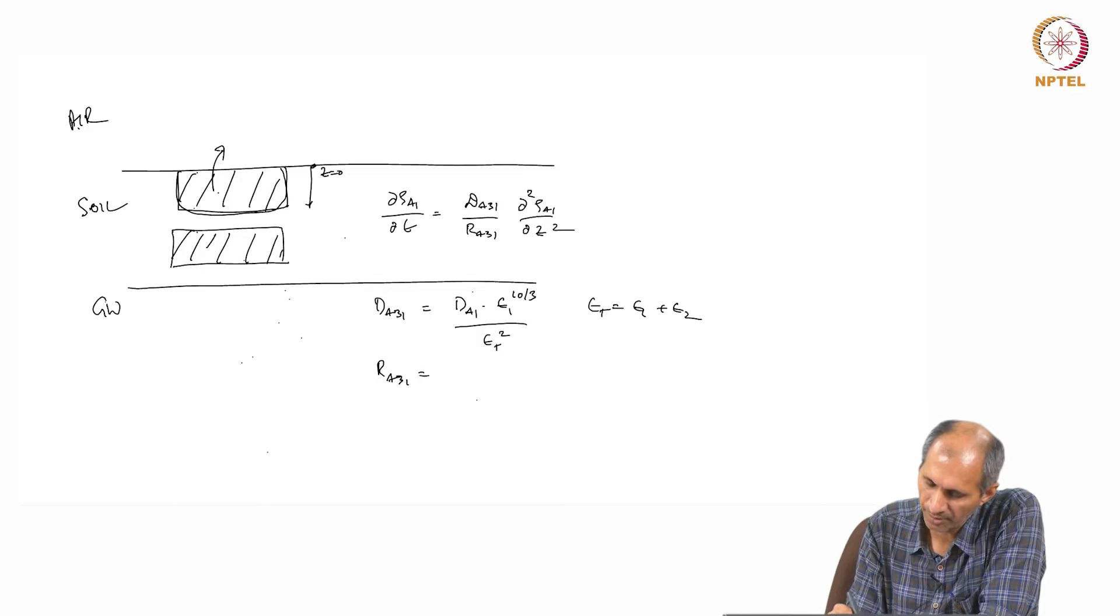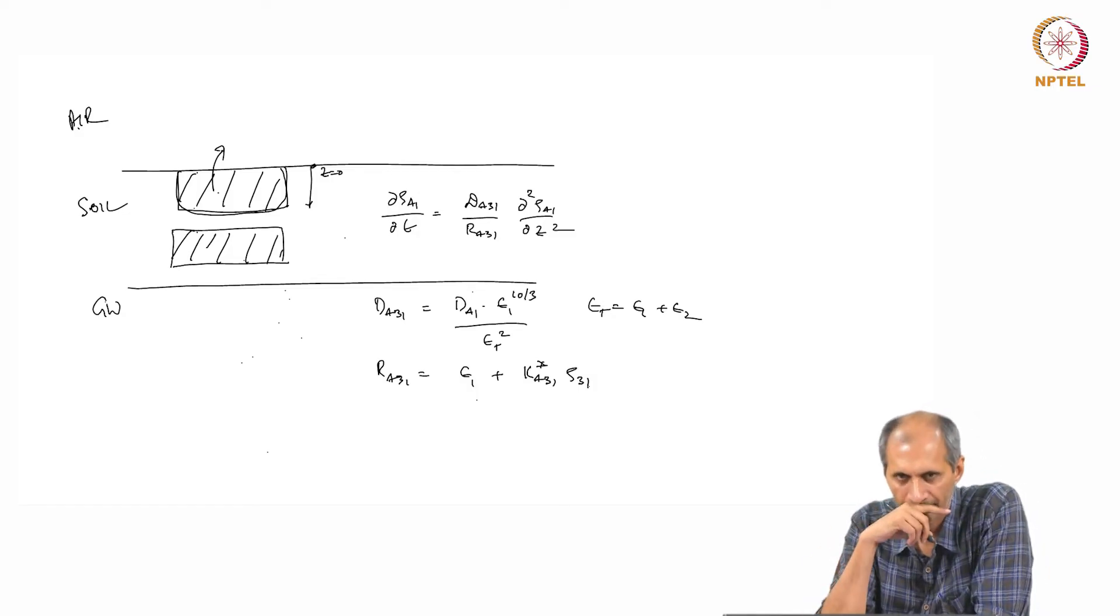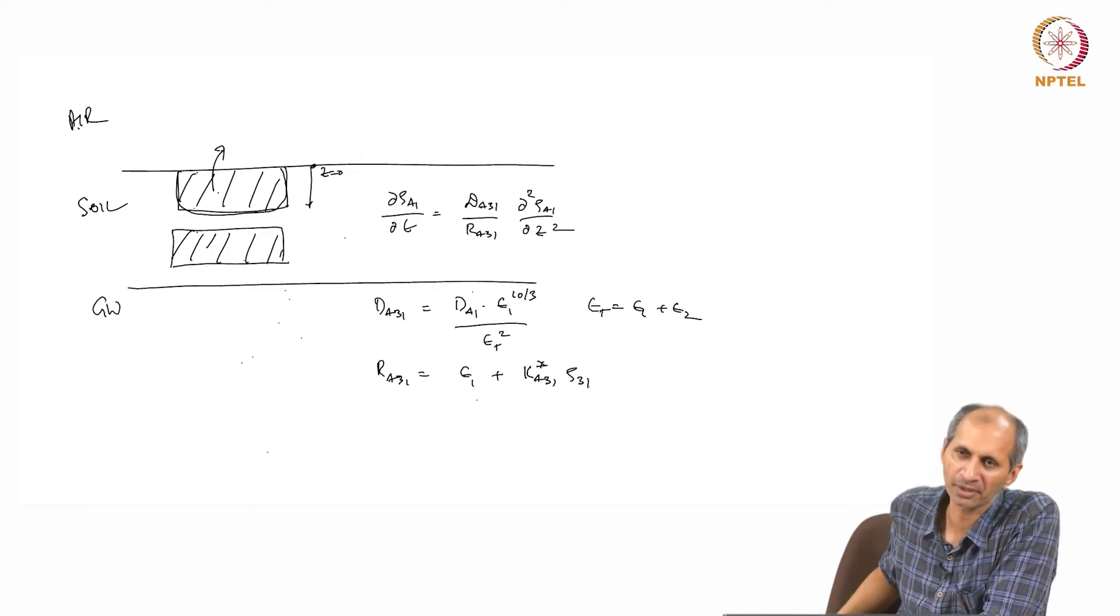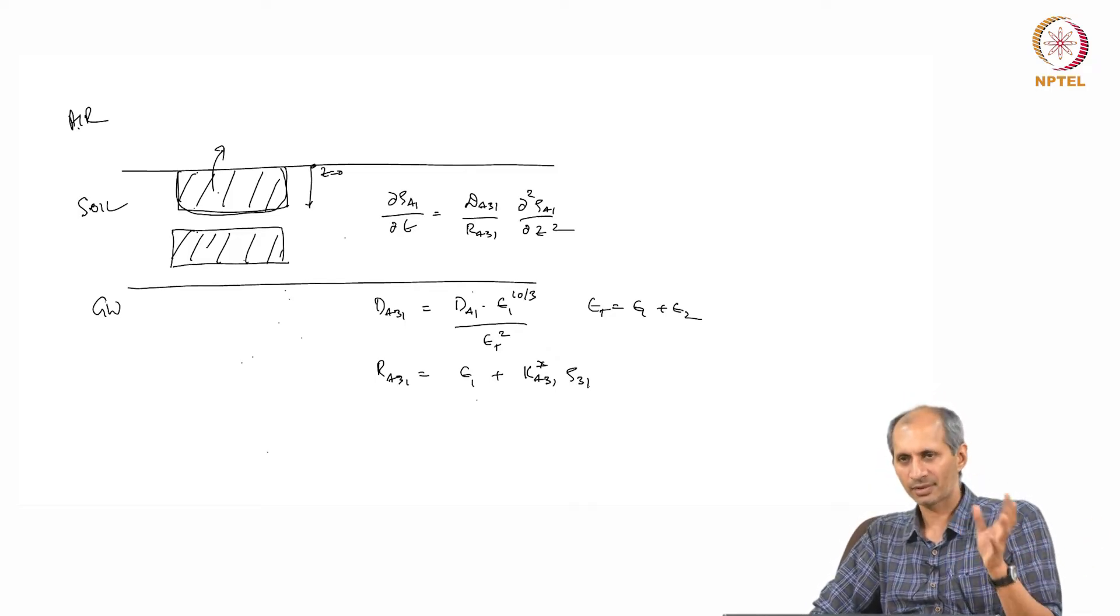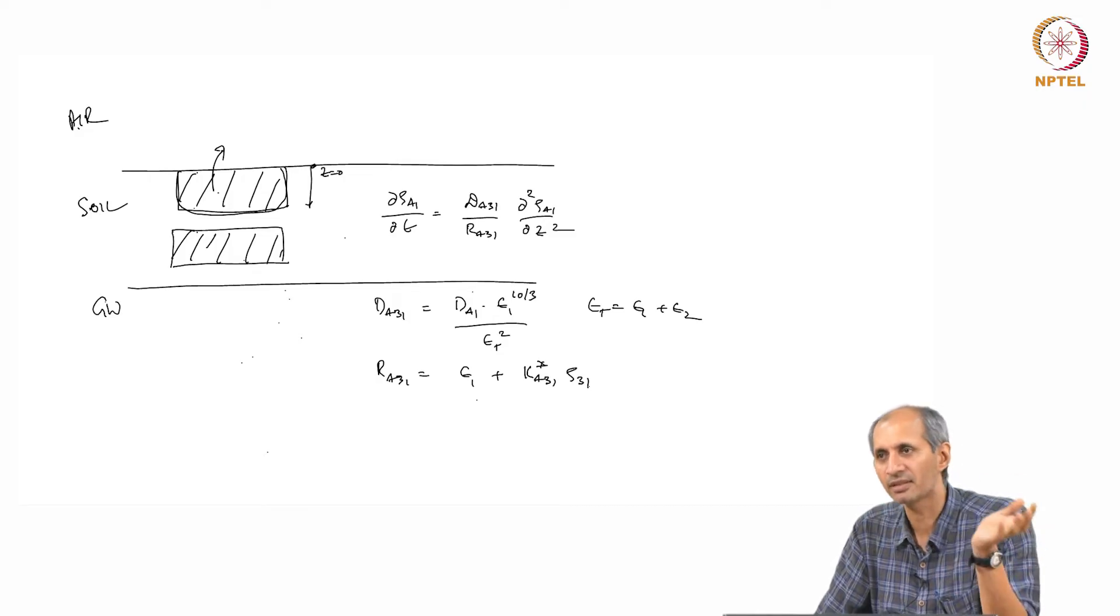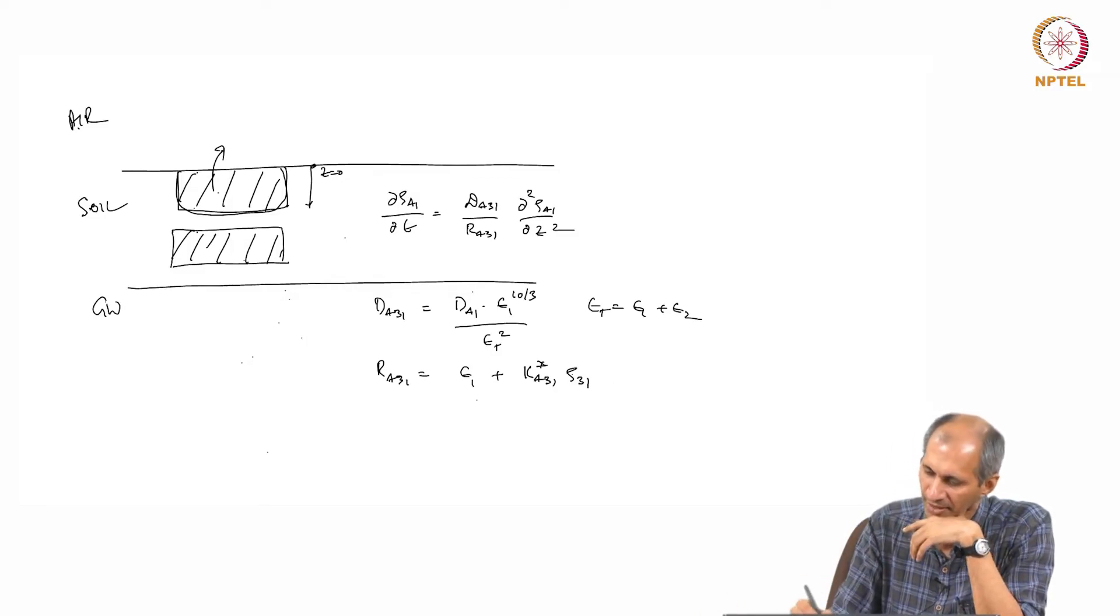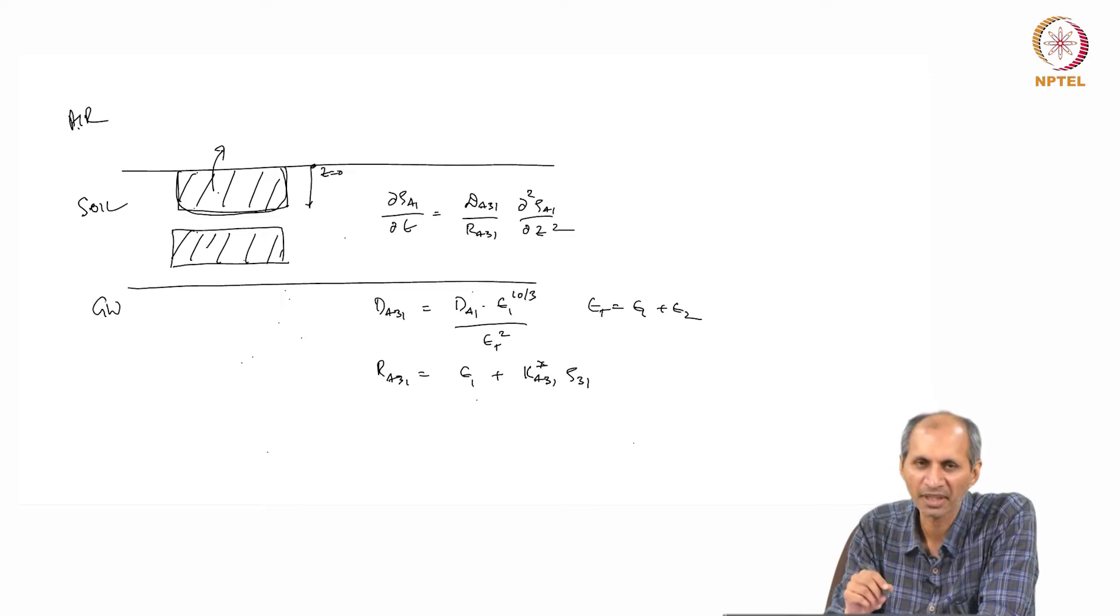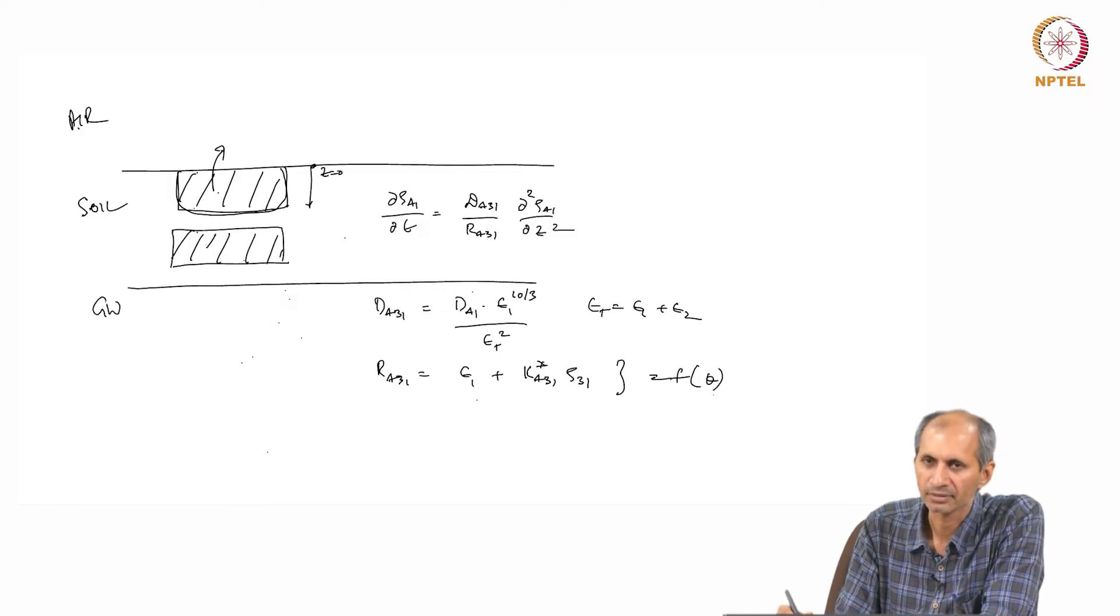Also Ra31 is now epsilon 1 plus Ka31 star into rho 31. This is the bulk density of the soil and Ka31 is the partition constant of a chemical with the soil. Now, here you have to consider all the usual things that if the soil is wet, the partition constant is based on KOC, FOC divided by Henry's constant. If it is dry, then it is something else, it is higher, so the same rules apply here.